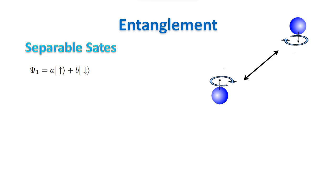The state of a half-spin particle system is given by the linear combination of two orthogonal basis vectors. In our case, we will use spin up and spin down as a basis. It takes two complex numbers to fully define the state of this system, and therefore the half-spin particle state is an element of a two-dimensional Hilbert space over the complex numbers.